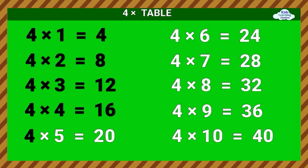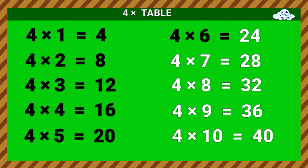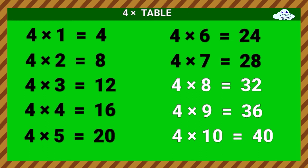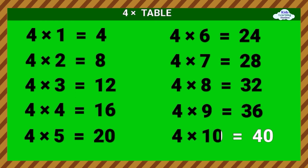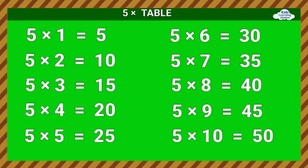4 times 6 equals 24. 4 times 7 equals 28. 4 times 8 equals 32. 4 times 9 equals 36. 4 times 10 equals 40. Five Times Table.